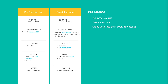In the Pro license, Pro licenses are for commercial apps with no watermark. This license is available when the number of downloads is under 100,000. If the number of downloads reaches 100,000, you may have to upgrade your license to Enterprise.